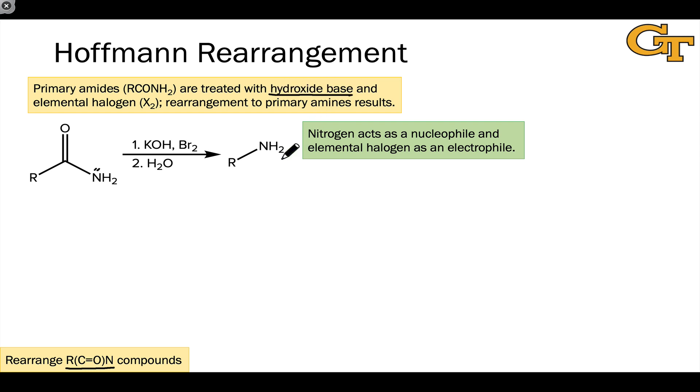The idea here is we start with a primary amide with an NH2 group linked to a carbonyl group, and we treat that with hydroxide base, and it's going to serve as a base, and elemental halogen. What this does is through a proton transfer step that occurs at the most acidic position in the molecule, which is the amide nitrogen, followed by an SN2 step actually at one of the atoms of the elemental halogen, we install a nitrogen-halogen bond, in this case bromine.